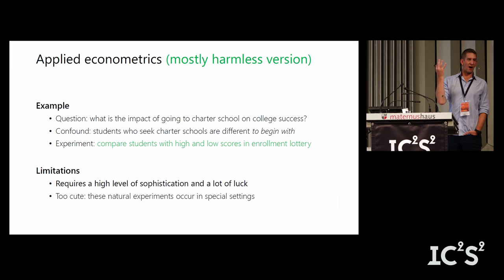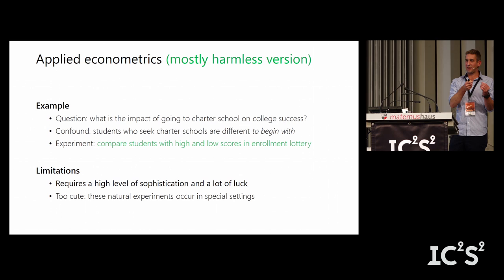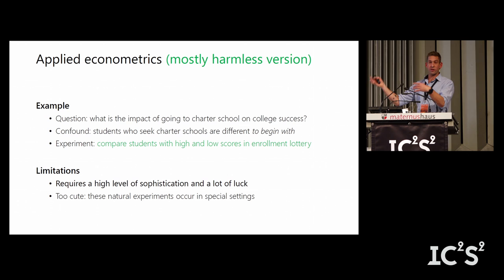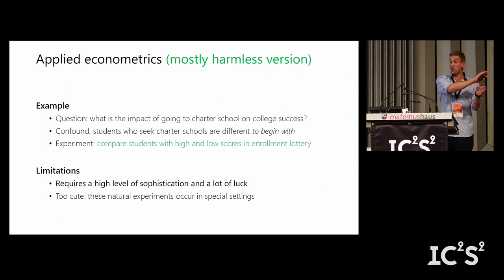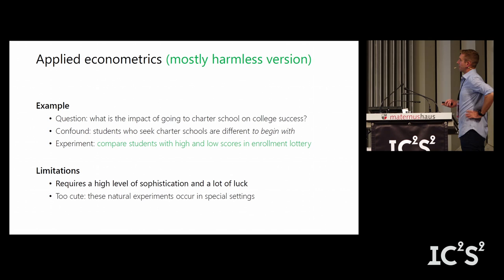The limitations of this approach are pretty serious and not well recognized. It requires high sophistication and a lot of luck. More importantly, these examples are often too cute — not every school district does randomized lotteries; it's typically only the most forward-thinking, wealthier districts. So we're finding funny little corners of the treatment effect space and then trying to generalize from that specific example to the entire affected population. That transfer may not be valid — there's a real crisis of external validity.